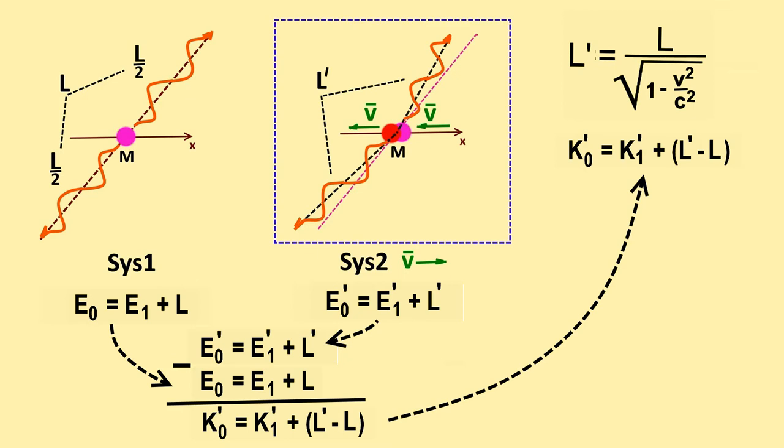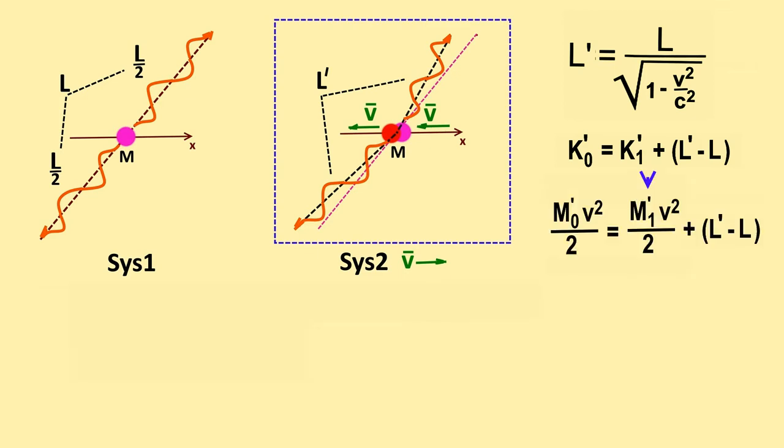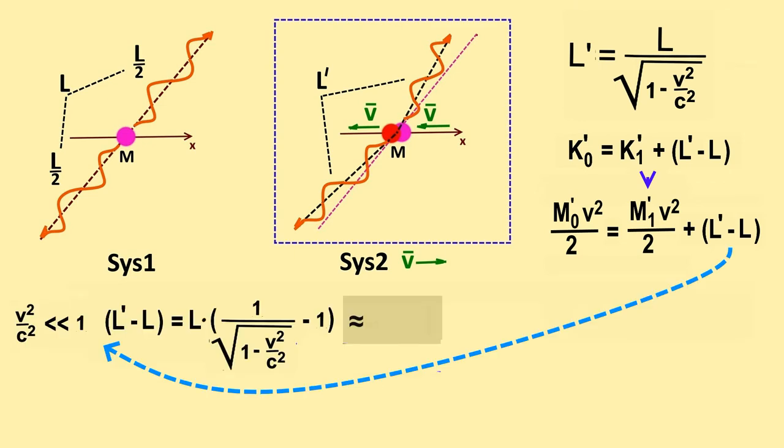Obviously, L' minus L is greater than 0, since L' is greater than L. But this means that K'0 is greater than K'1. That is, the kinetic energy of the particle after radiation should decrease. But remember that the velocity of the particle V does not change after radiation. So the mass of the particle must decrease.